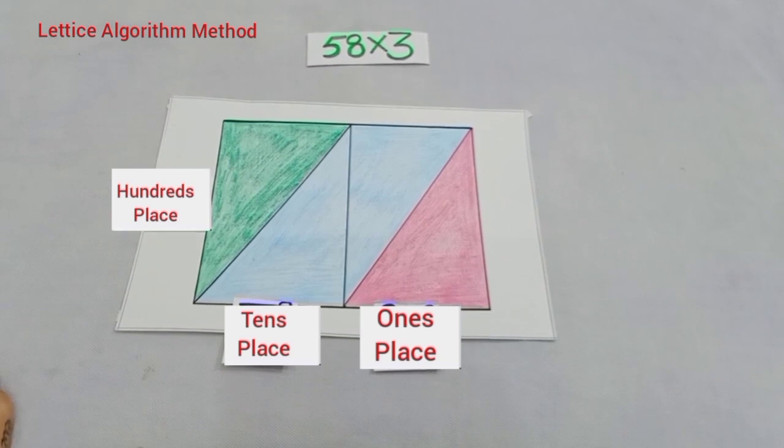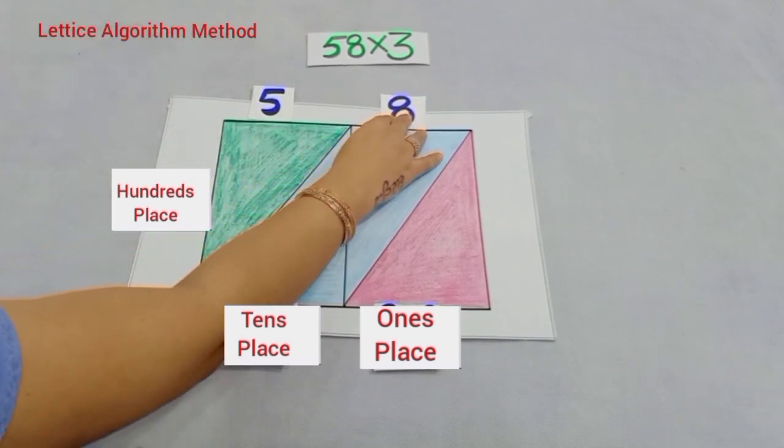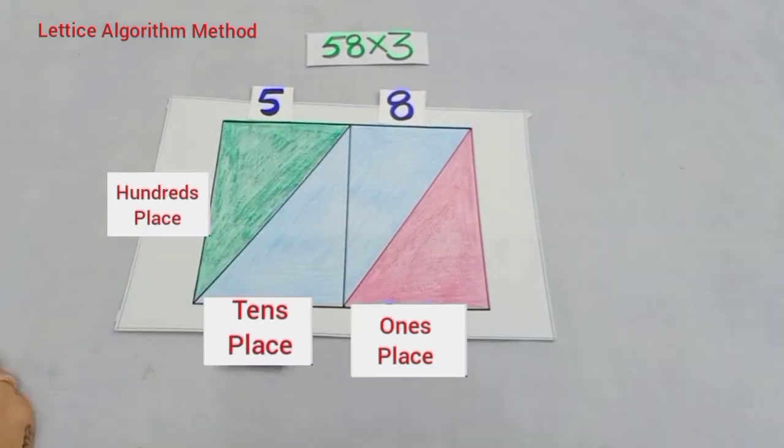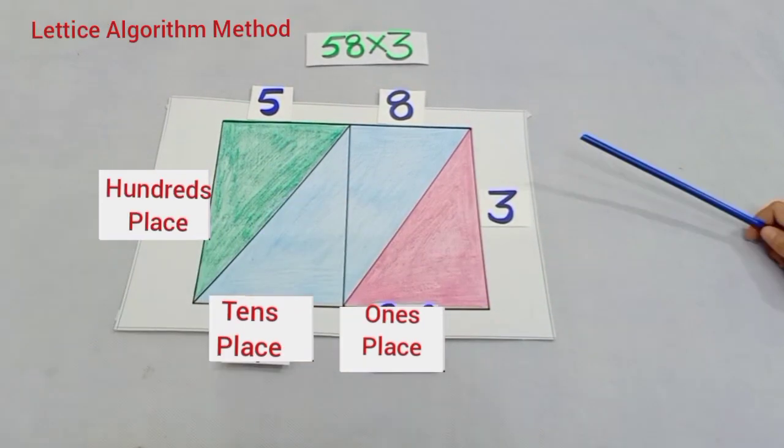Now, to start the multiplication, firstly we will put two digits, that is five and eight like this. And now we write three here like this. Now we will start multiplication.